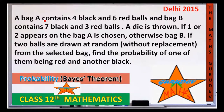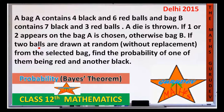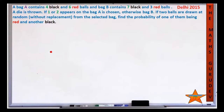Bag A contains 4 black and 6 red balls, and bag B contains 7 black and 3 red balls. A die is thrown. If 1 or 2 appears, bag A is chosen; otherwise bag B is chosen. Two balls are drawn at random without replacement from the selected bag. Find the probability of one ball being red and the other black.